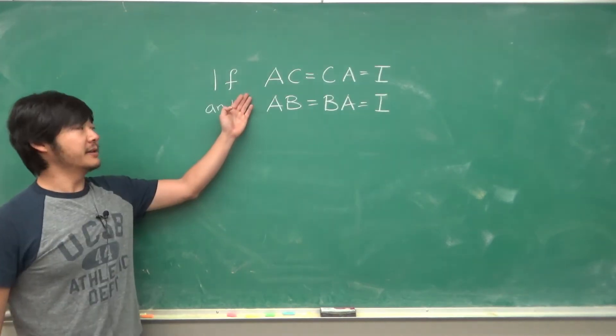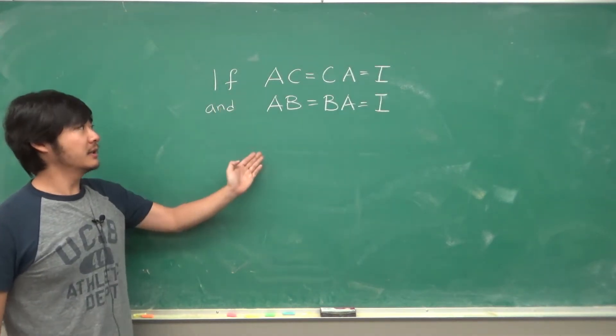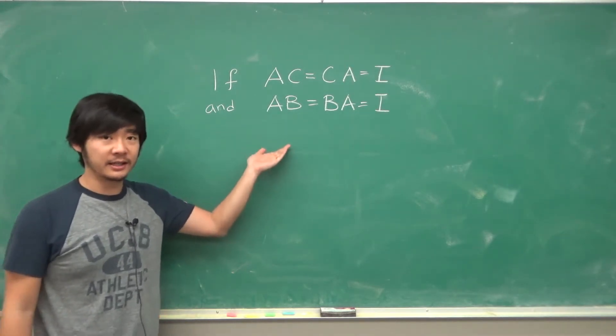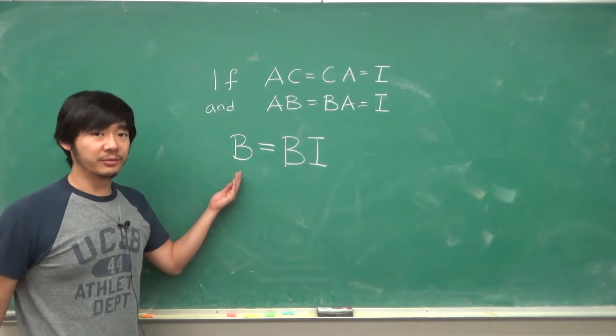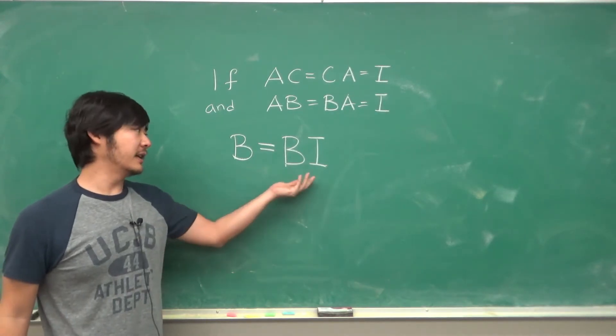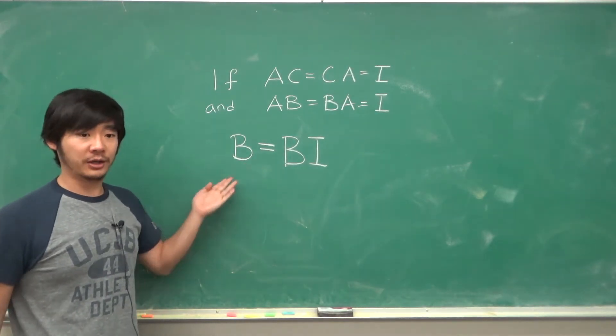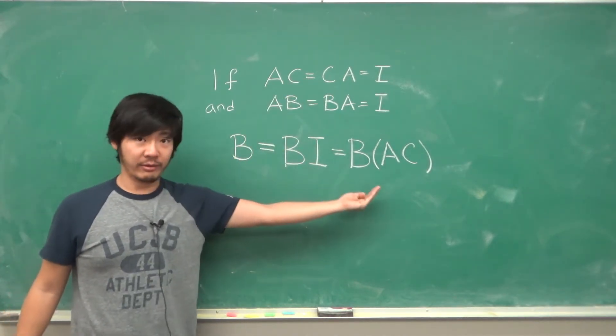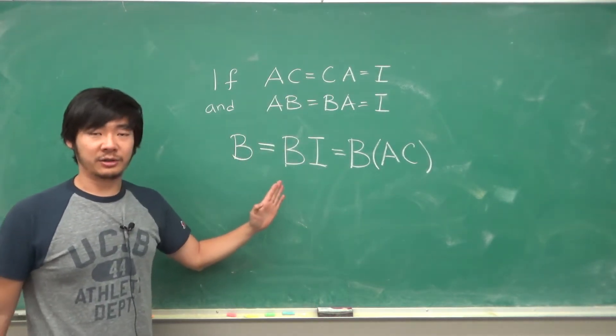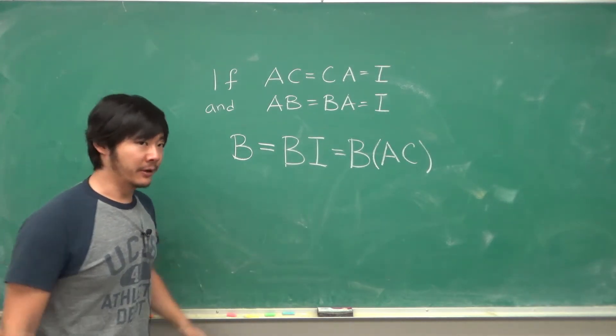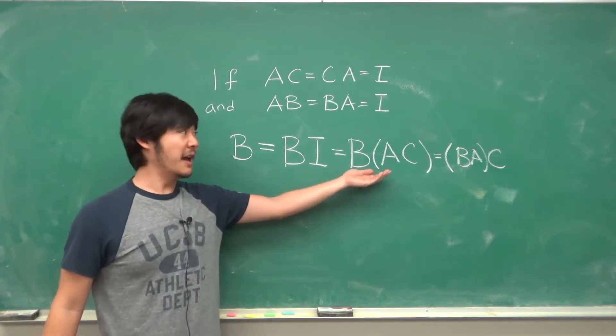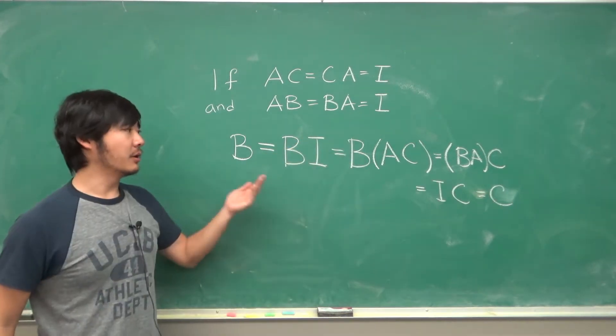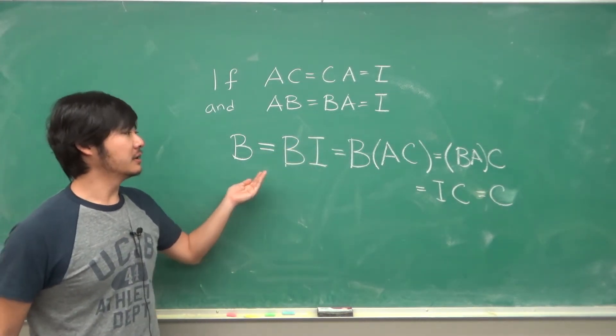So if AC equals identity and also AB equals BA equals the identity, then we can multiply B with the identity and it won't change anything. But the identity is AC, so we replace that. And matrix multiplication is associative, so we can multiply BA first, but BA is the identity, and so B is equal to C.